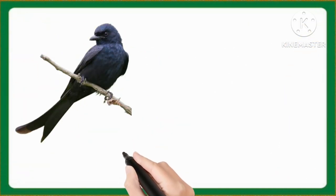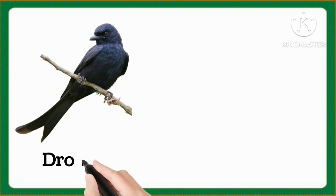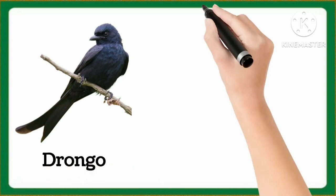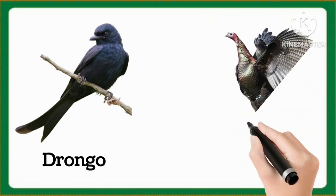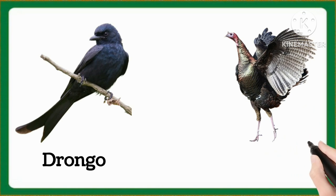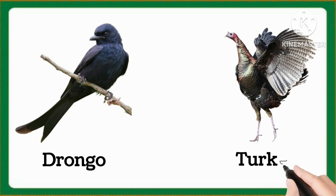And which word is this, kids? This is drongo. Drongo. And which word is this, kids? This is turkey. Turkey.